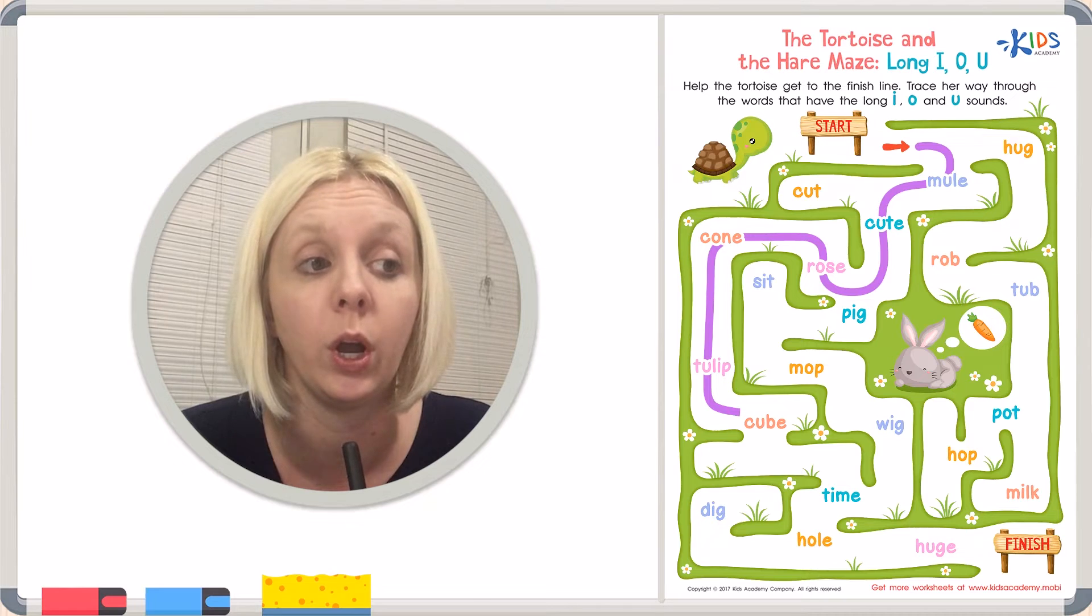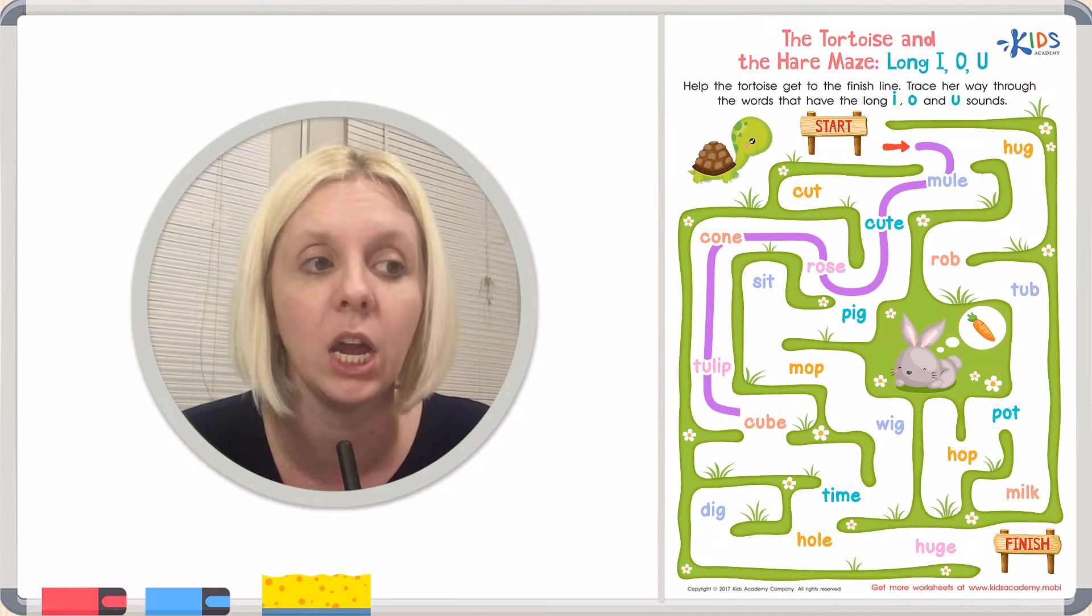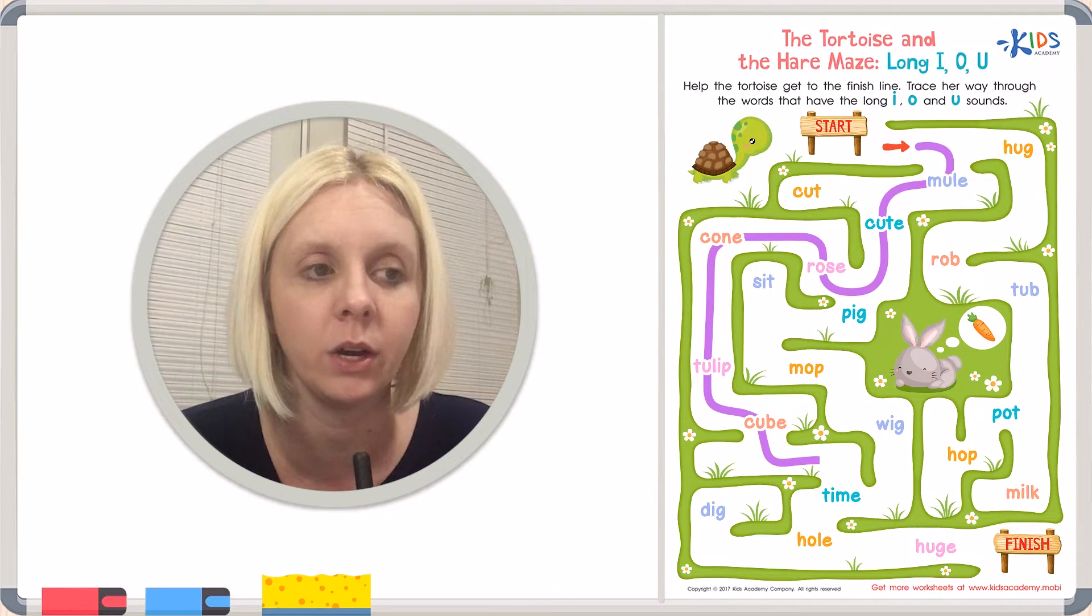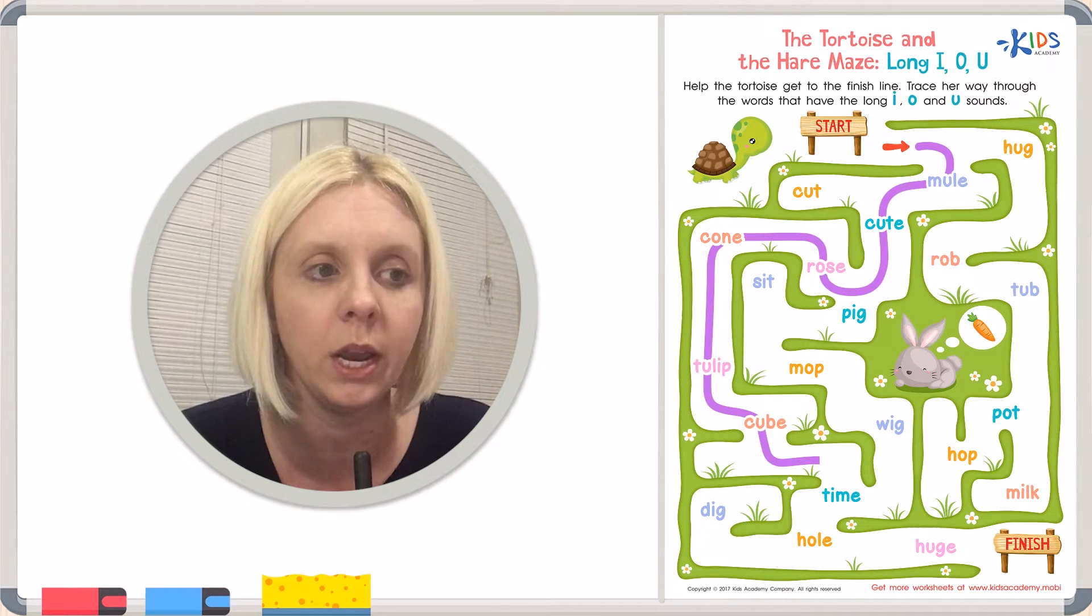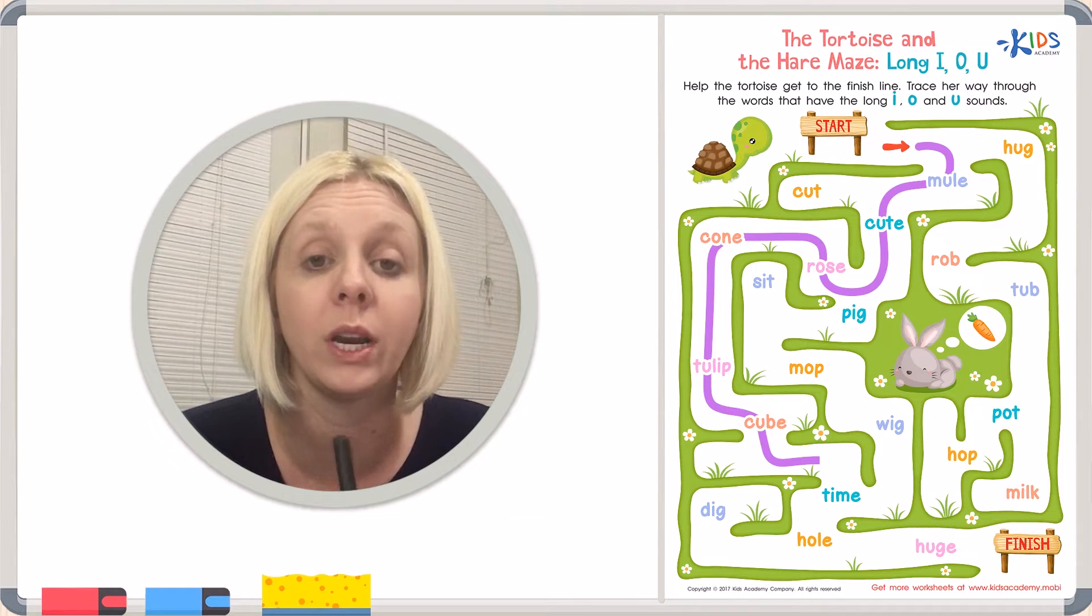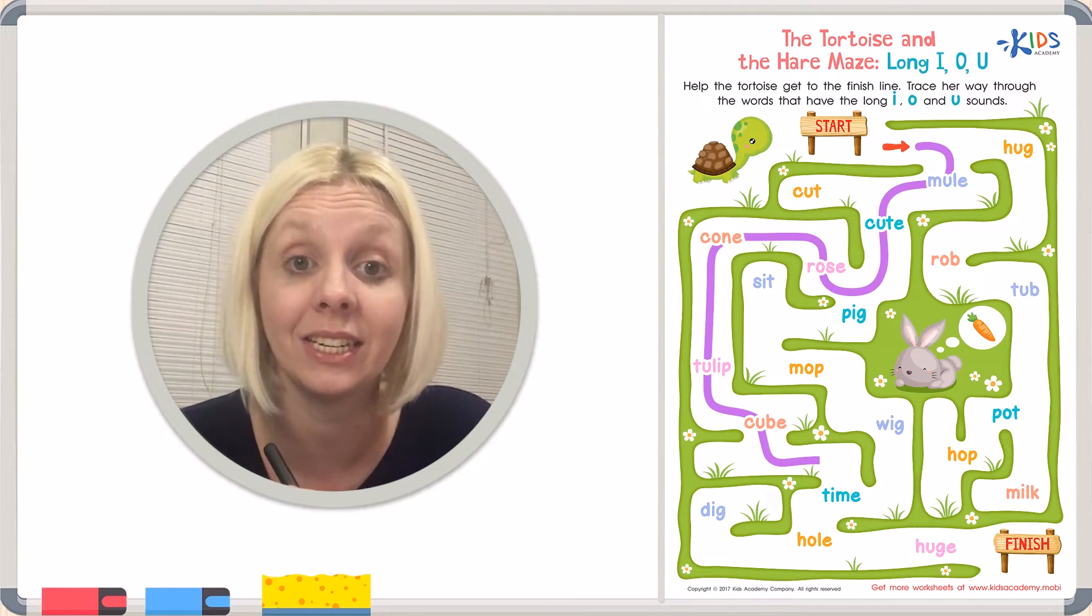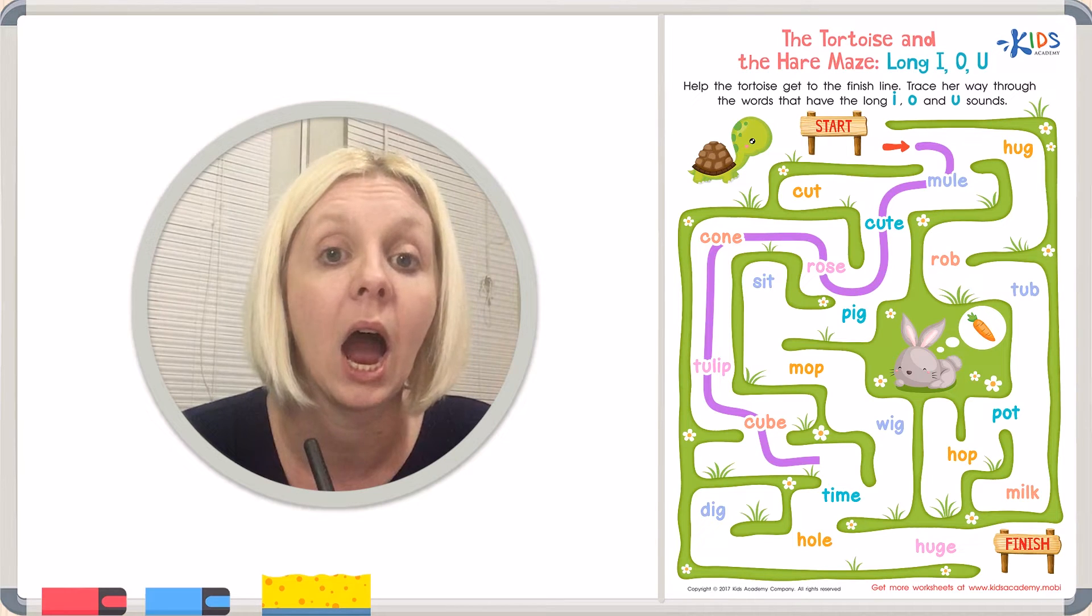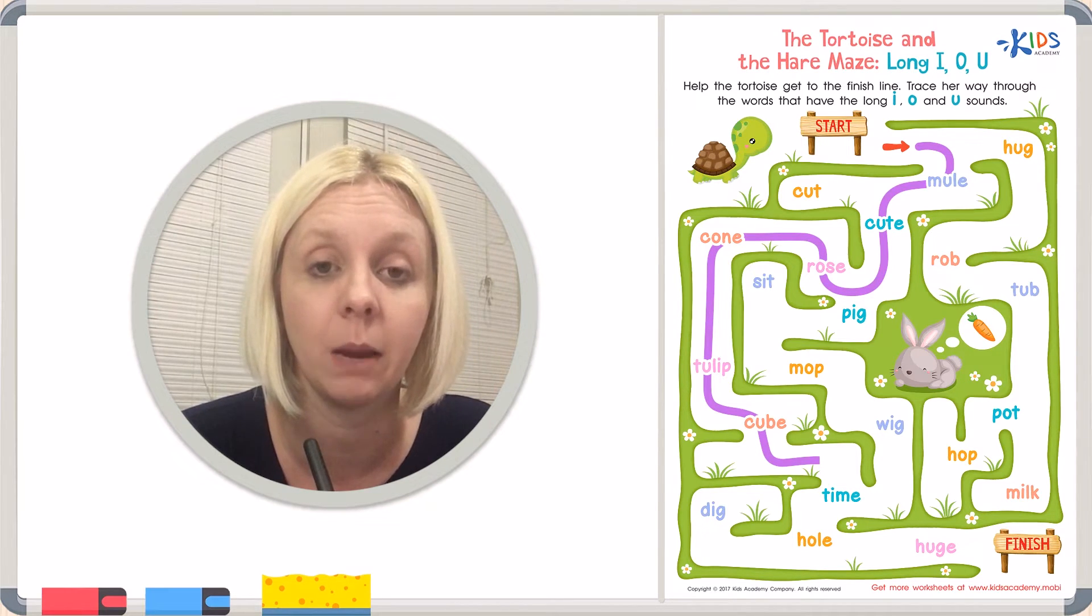And now we're running into cube. Cube. Does it say its name? Does U say its name? It does. So we're going the right way. We're going to go through cube here and we're going to keep going down. And then we're going around this way. And we have another word. The word is time. Let's listen and see if I, that vowel in the middle says its name. Time. Does it say its name? Time. Yeah, it does. It has that I sound and we've got our friend the E at the end.